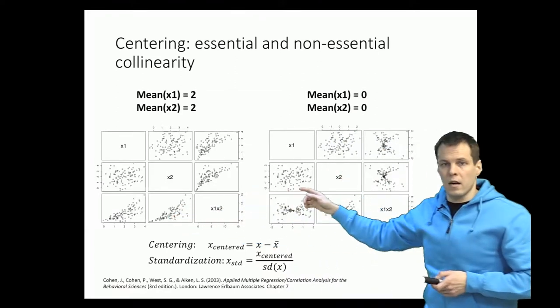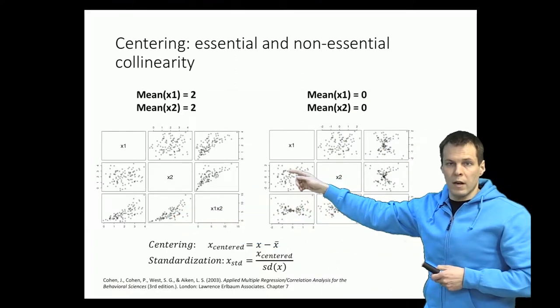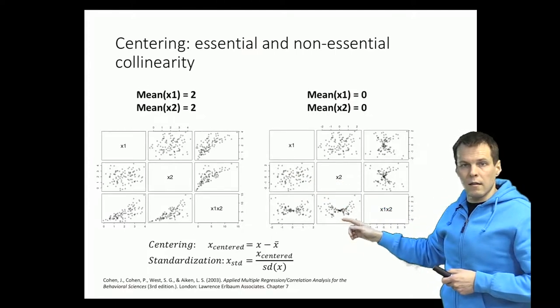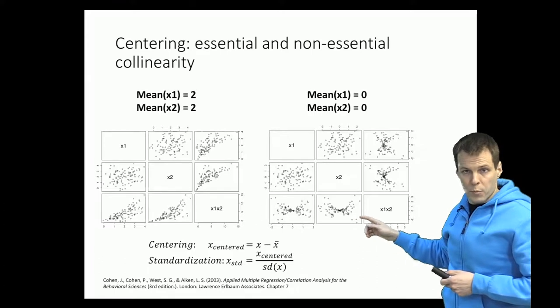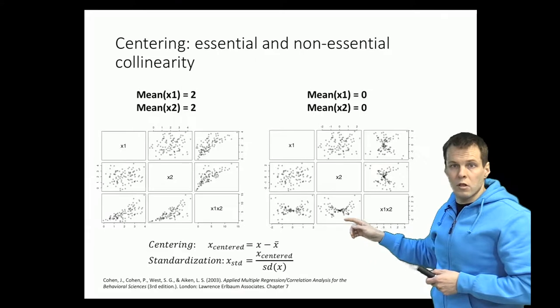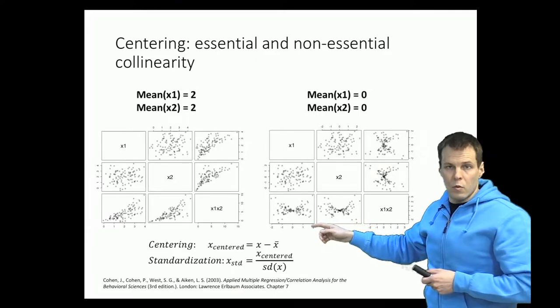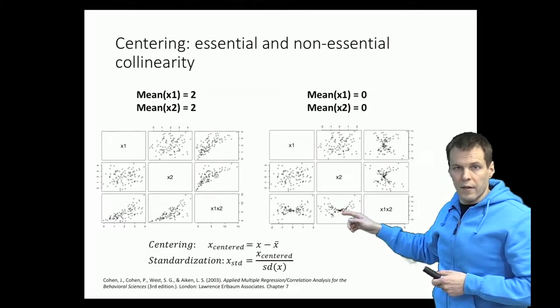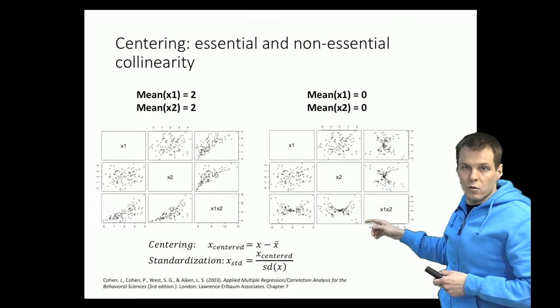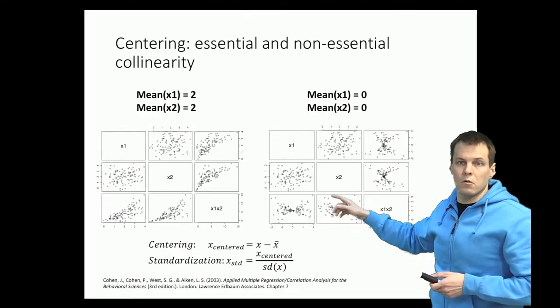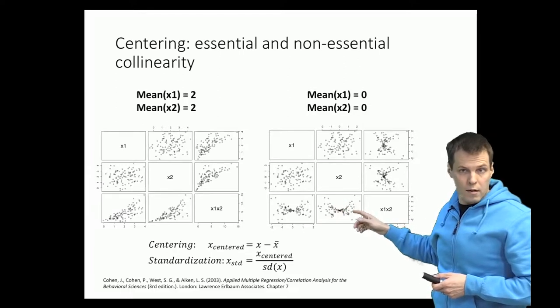When we center the variables the bivariate relationship here stays the same but we can see that the relationship between X1 and X2 and their product is quite different. There's still a strong statistical relationship. So when our X1 or X2 goes to 0 then there is no variation in the data and then it spreads out when X1 and X2 increases. So there is still a strong statistical association but it is no longer a linear association.